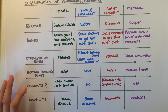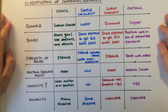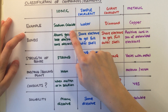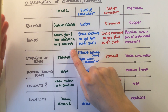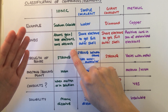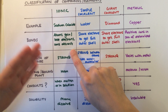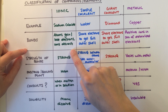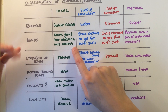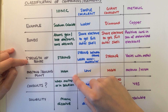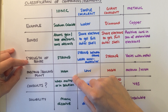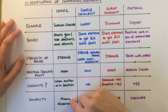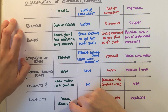Here's a quick summary of the types of structures we've looked at in detail so far in C2. Ionic substances like sodium chloride are formed when atoms lose or gain electrons from their outer shell to become ions. They're then attracted to each other — these bonds are very strong, resulting in high melting points. They conduct electricity when molten or dissolved in water, and many ionic substances do dissolve.